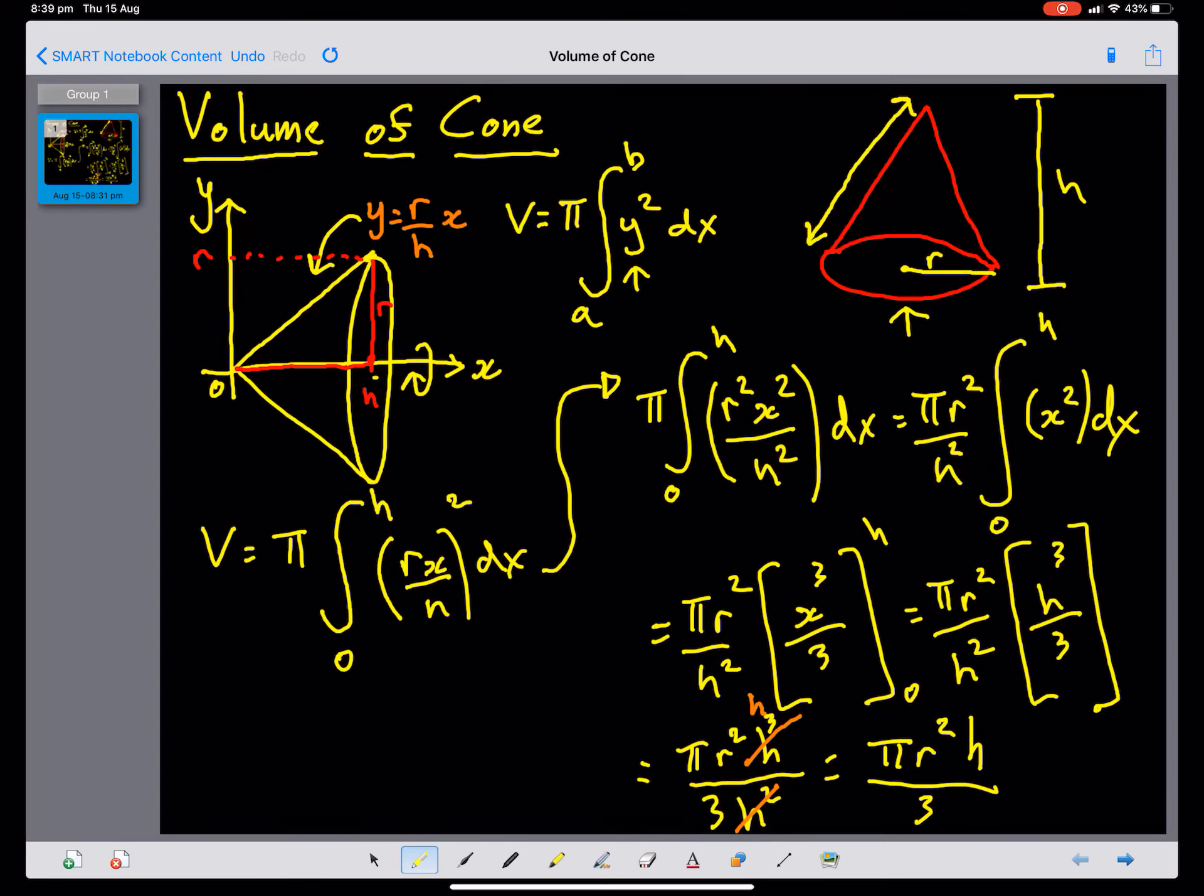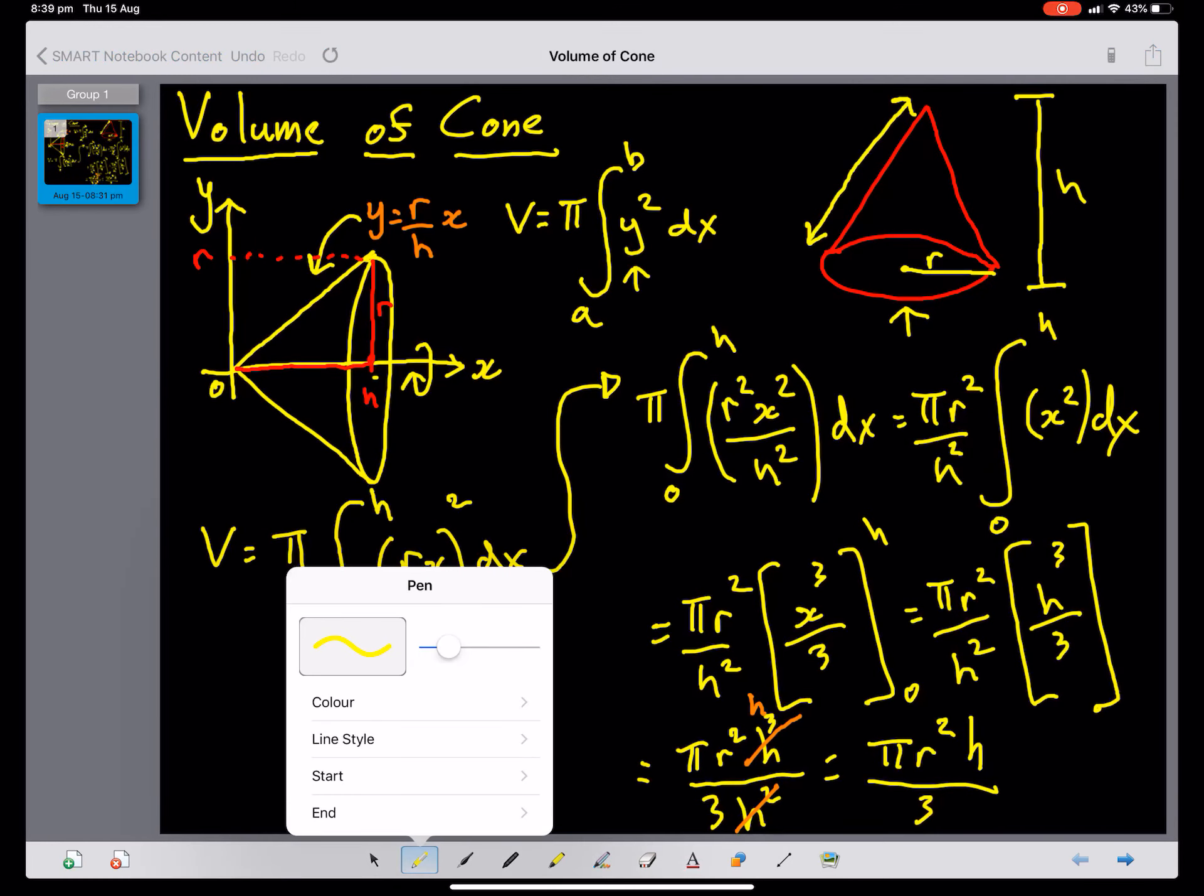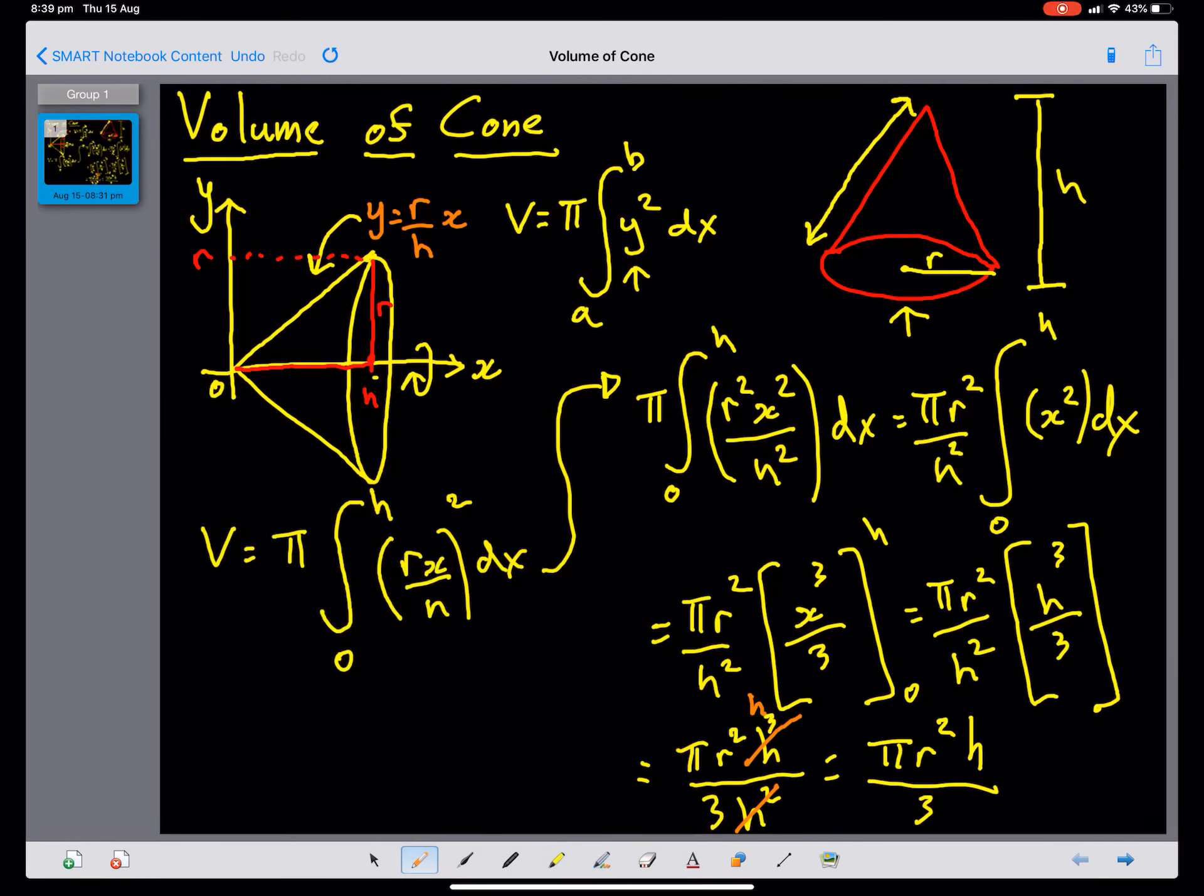I'm going to write this at the top. This is how to derive the volume of a sphere, which is V, the volume of a cone, rather, which is pi, R squared, h, all divided by 3. Marvelous.